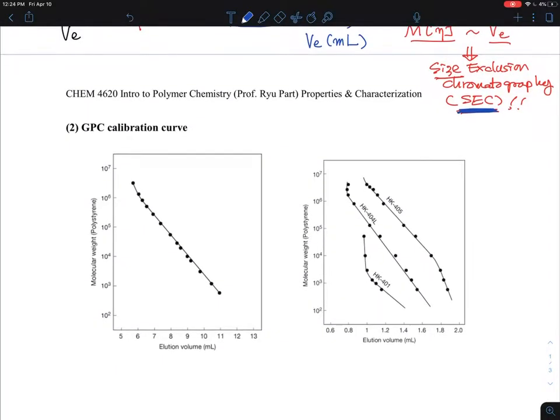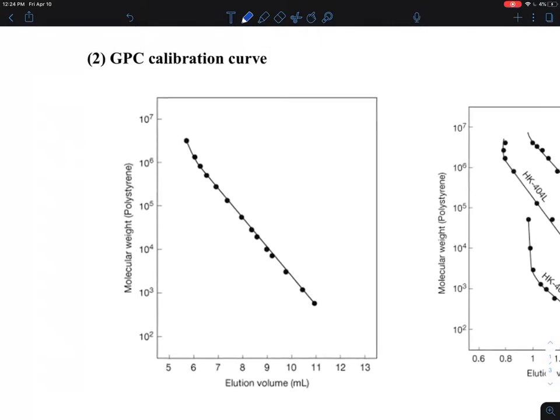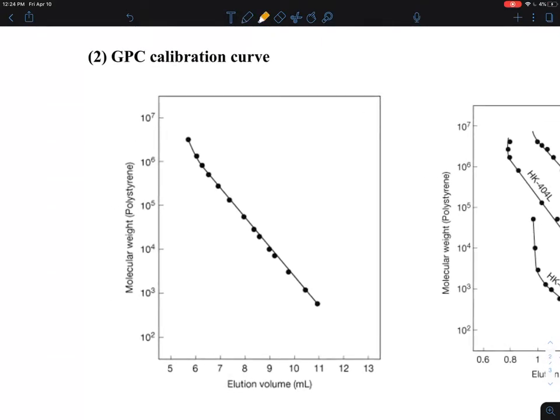Let me continue to talk about GPC. This section, I'm going to focus on what is called the GPC calibration curve. I wanted to show you that this one is the elution volume. You see the elution volume here? And then this is molecular weight. And if you look at the fine print, it says polystyrene.